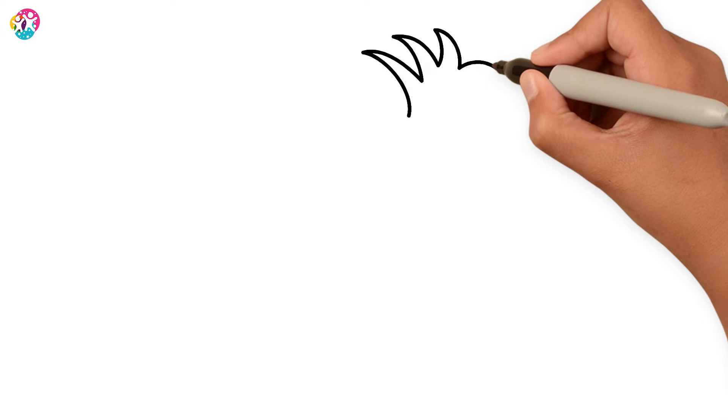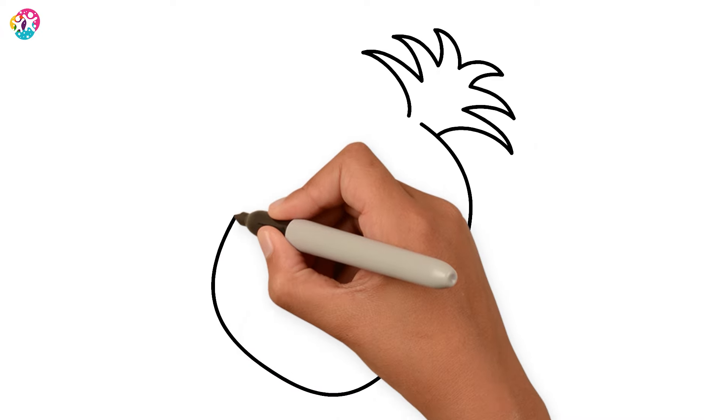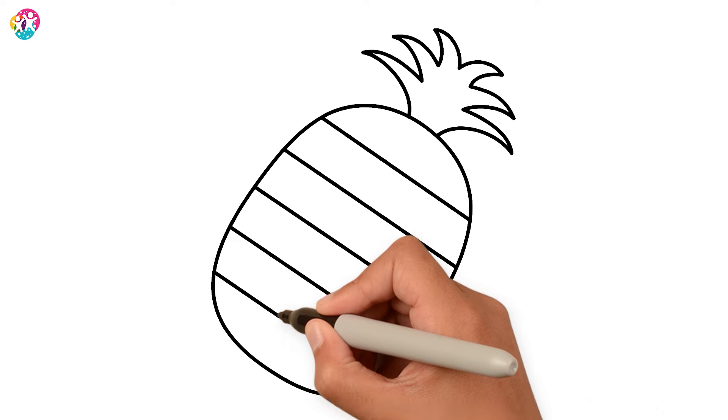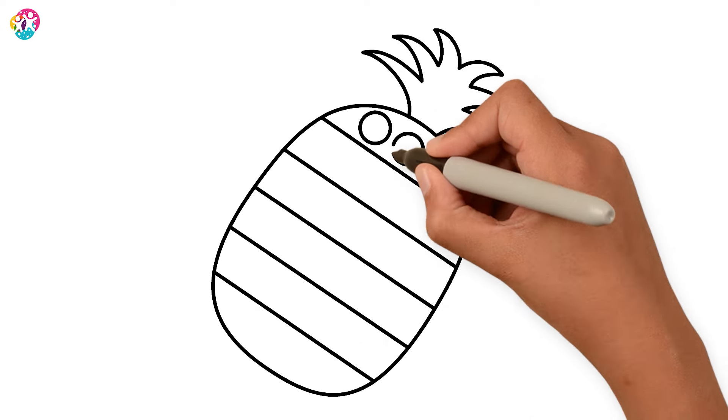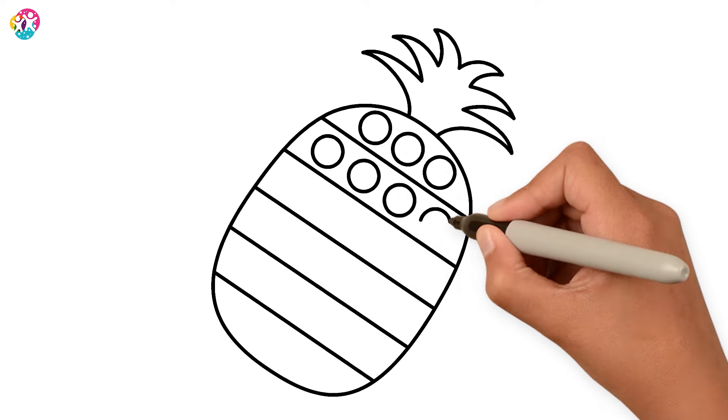Let's start with the head of the pineapple. It has spiky leaves. And now the main part of the pineapple. The little circles are like spikes, up and down, all over the pineapple.